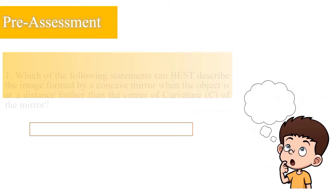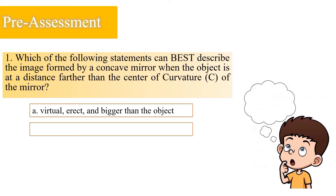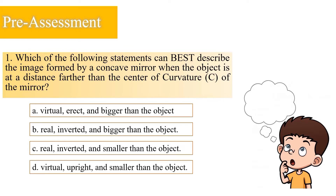Question number one: Which of the following statements can best describe the image formed by a concave mirror when the object is at a distance farther than the center of curvature of the mirror? Is it A: virtual, erect, and bigger than the object? B: real, inverted, and bigger than the object? C: real, inverted, and smaller than the object? Or D: virtual, upright, and smaller than the object?